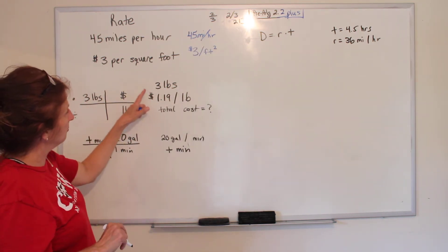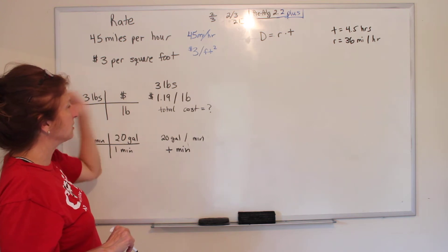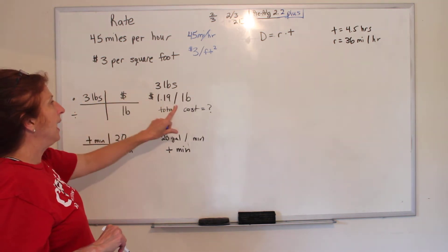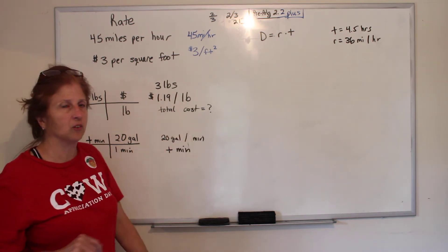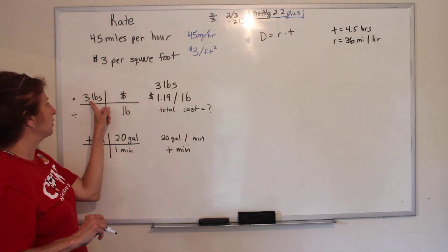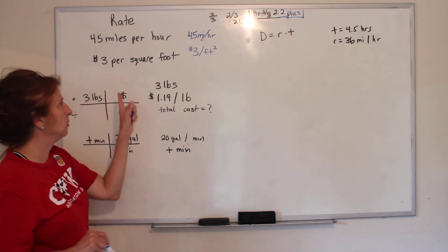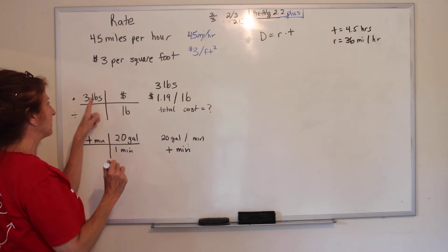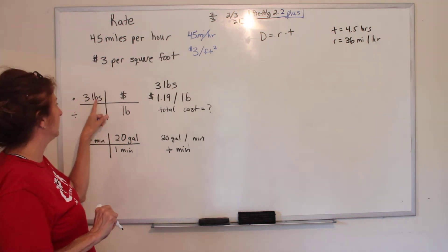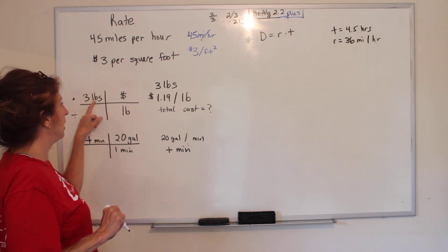Alright, so here's the example problem. You want to buy some bananas. You want to buy three pounds of them. And bananas cost $1.19 a pound. So what's the total cost? This is how you do it. First you write what you know or what you want, three pounds. Then you draw these railroad tracks and you write the same unit that you have in what you know on the bottom.